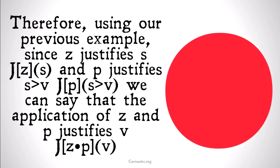Using our previous example: since Z justifies S, we can write that as 'Z justifies S,' and P justifies S implies V, we can write that as 'P justifies S implies V.' We can then say that the application of Z and P justifies V, which we write as J[Z·P](V). Basically, because Z justifies S and P justifies S implies V, we can say that Z and P together justify V.